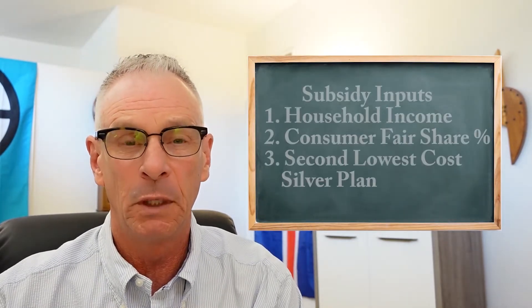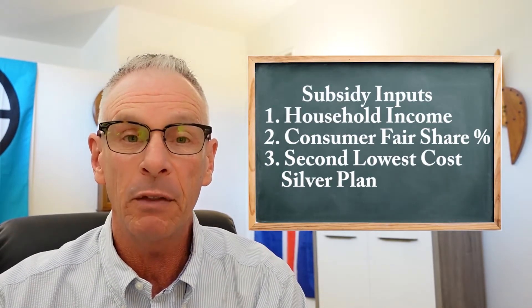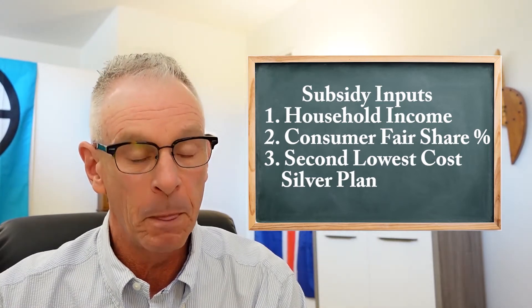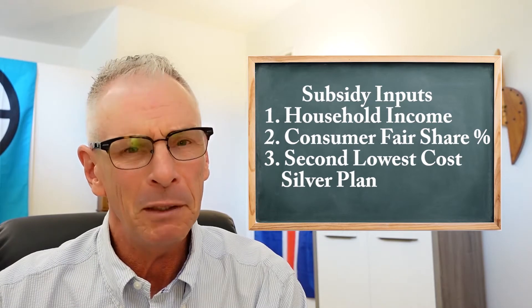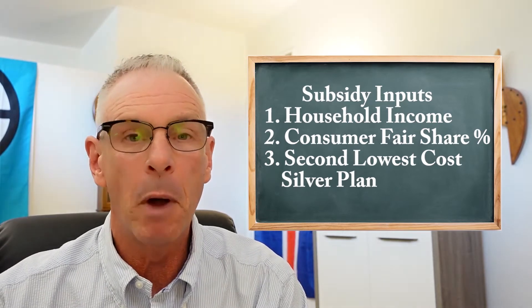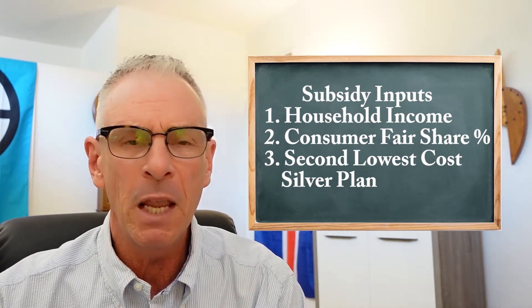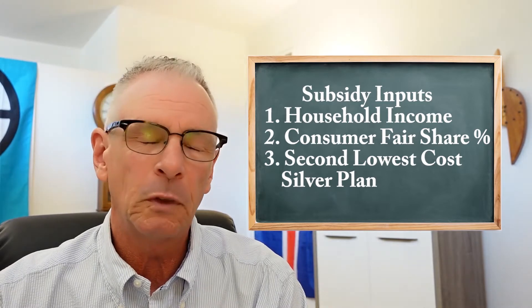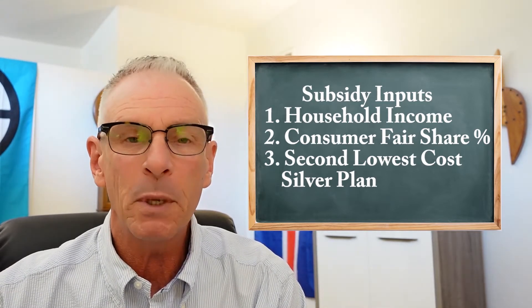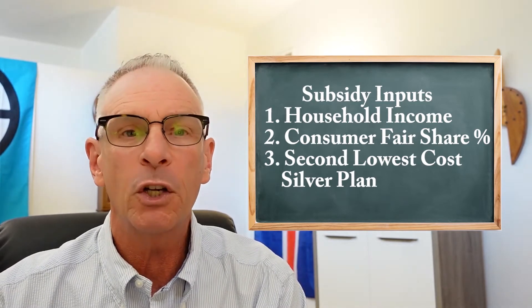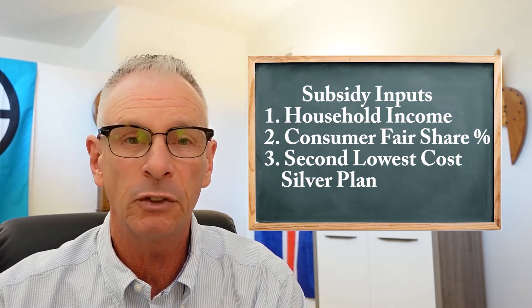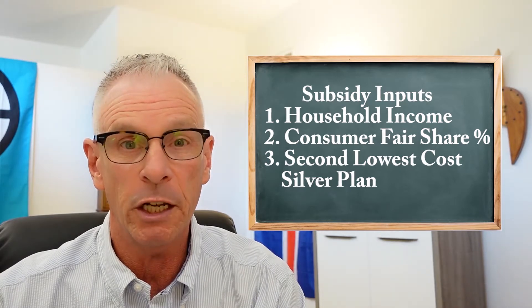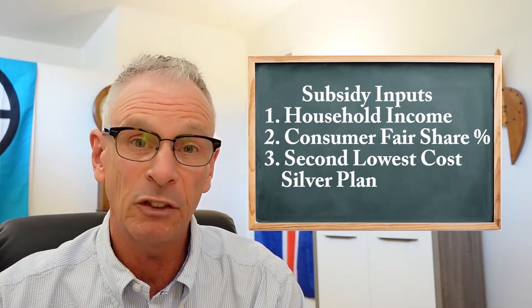There are three main components that go into determining the subsidy for the Affordable Care Act. The first is the household income, and of course that can be a little bit complicated because it's called the Modified Adjusted Gross Income. There's lots of information on that, but it's your AGI on your federal tax return plus Social Security income, tax exempt interest, and foreign earned income. So you have to estimate that.